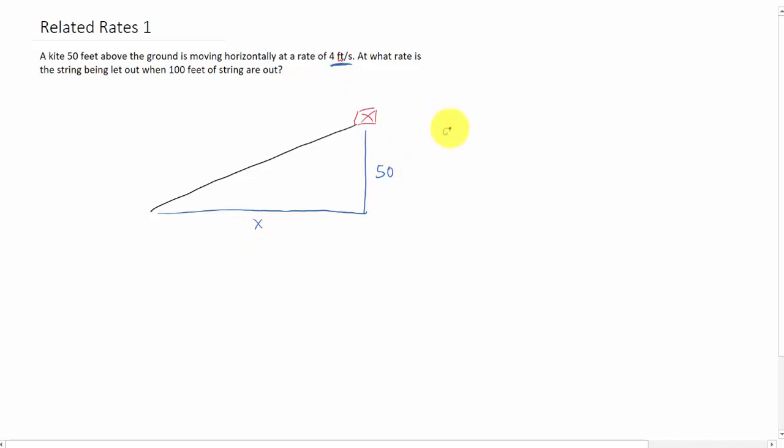So in terms of calculus notation, that means that dx/dt equals 4. This distance is increasing, so we're using a positive value for 4.